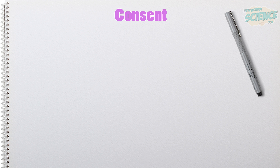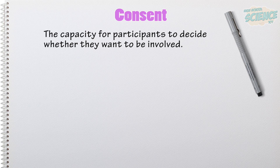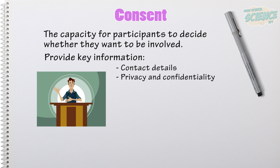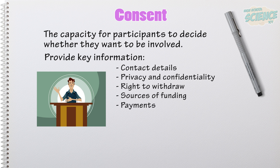Consent is another really important aspect of ethical research. It basically involves giving people the capacity to choose whether or not they want to be involved in your research. This includes potential participants understanding what your research is about and what's required of them. There's a lot of key information that you need to give to potential participants, including your contact details and where complaints should be directed, how their privacy and confidentiality will be protected, their right to withdraw at any stage, what the sources of funding are, whether there are any payments to be made to participants, and how your data will be managed and used.